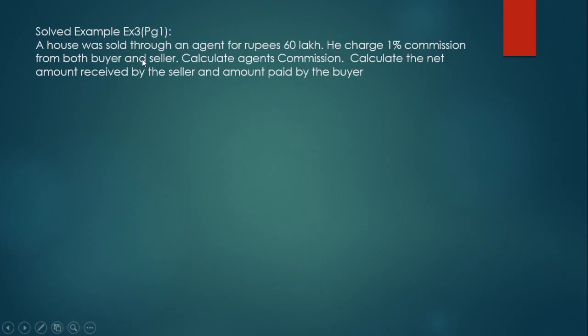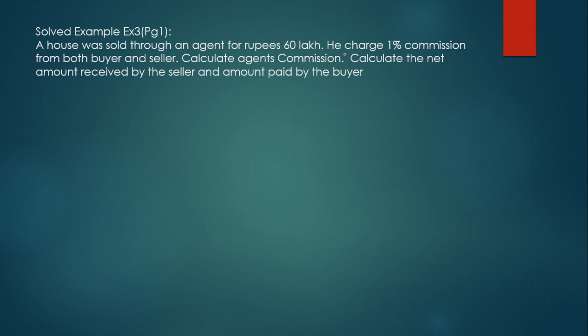Solved Example 3, page 1 of Chapter 1. A house was sold through an agent for 60 lakhs. The agent charged 1% commission from both the buyer and the seller. We need to calculate three things: (1) the agent's commission, (2) the net amount received by the seller, and (3) the amount paid by the buyer.